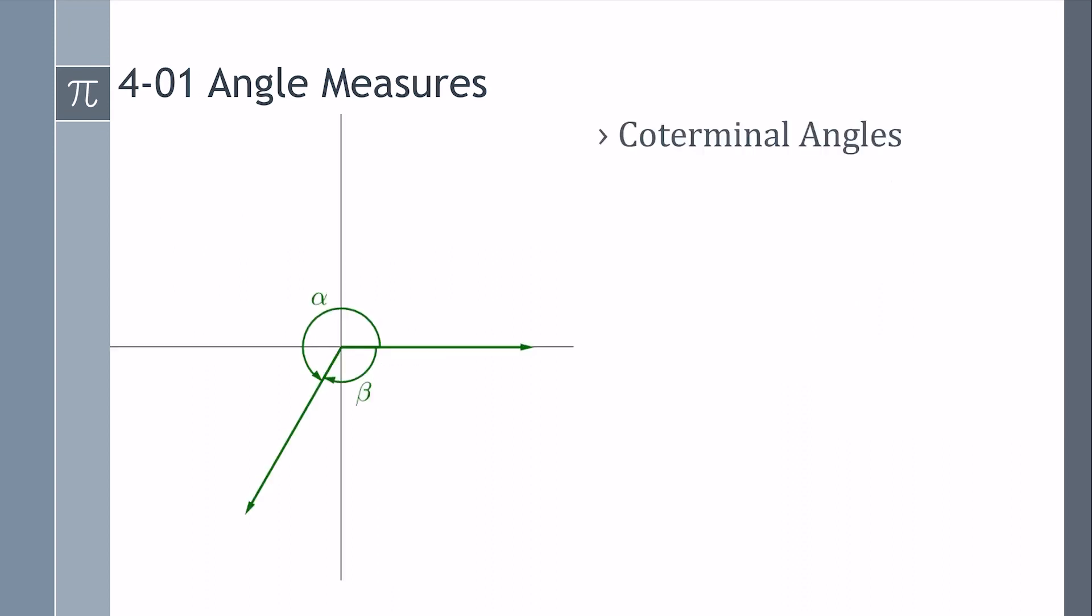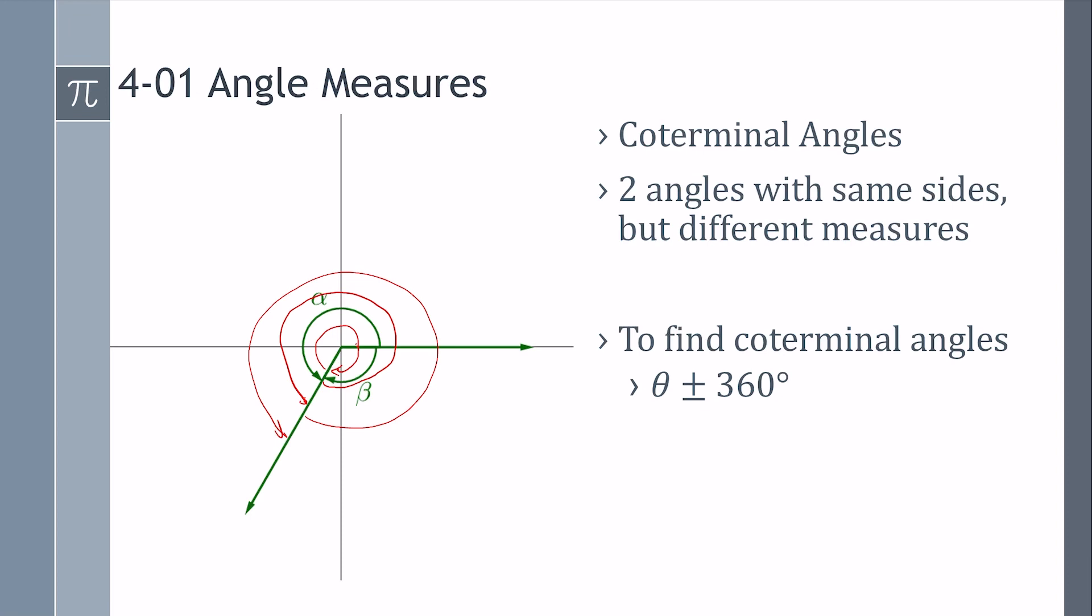Since the terminal side is just rotated around, we could rotate around and around and get what are called coterminal angles. These are two angles with the same sides but different measures, such as in this picture, alpha and beta are different sizes, but they have the same sides of the angle. We can get these by simply going around again, or again, or going backwards all the way around. All the way around is 360 degrees. So to find coterminal angles, just add or subtract 360 degrees.